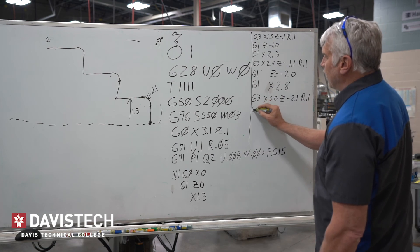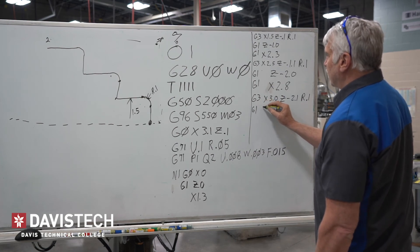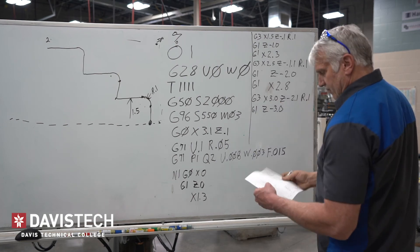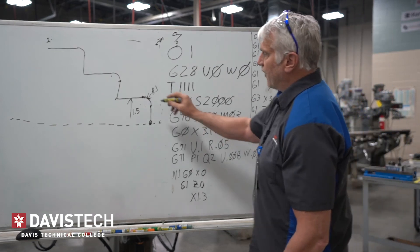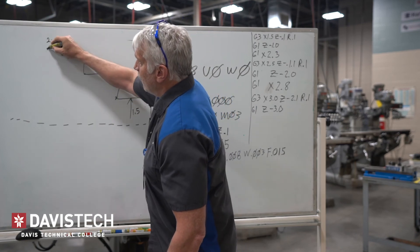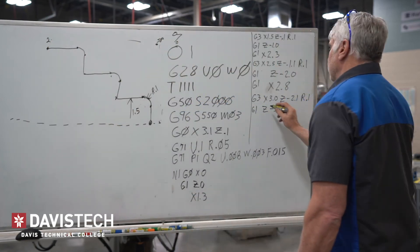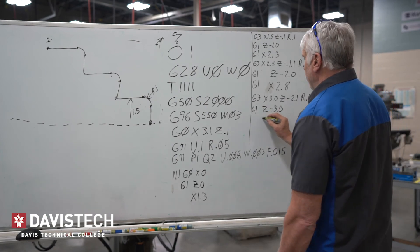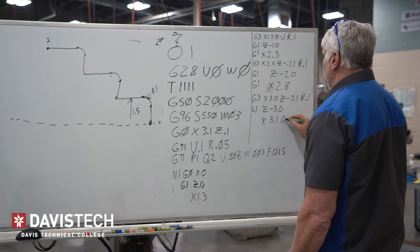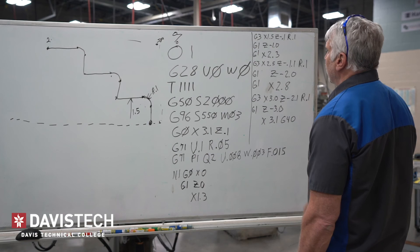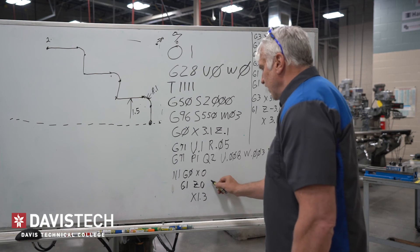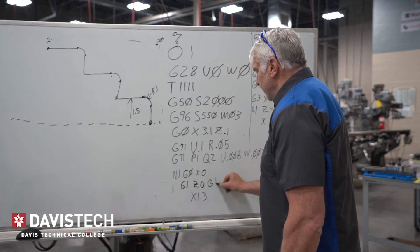And then I'm going to do a G01 to Z negative 3.0, and that gets me to the end of my part. I've gone from here to here, to there, to there, to there, to there — my Z negative 3. I'm going to also go to X 3.1 and put a G40 in there for cutter comp cancel. And one thing I forgot to mention — right here on this G, I want cutter comp to the right, which is a G42.